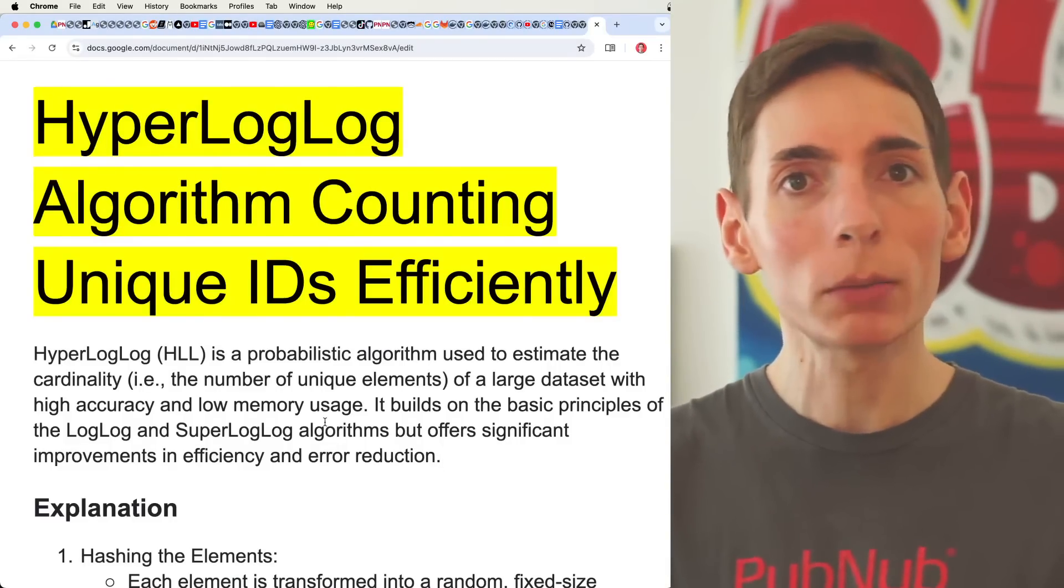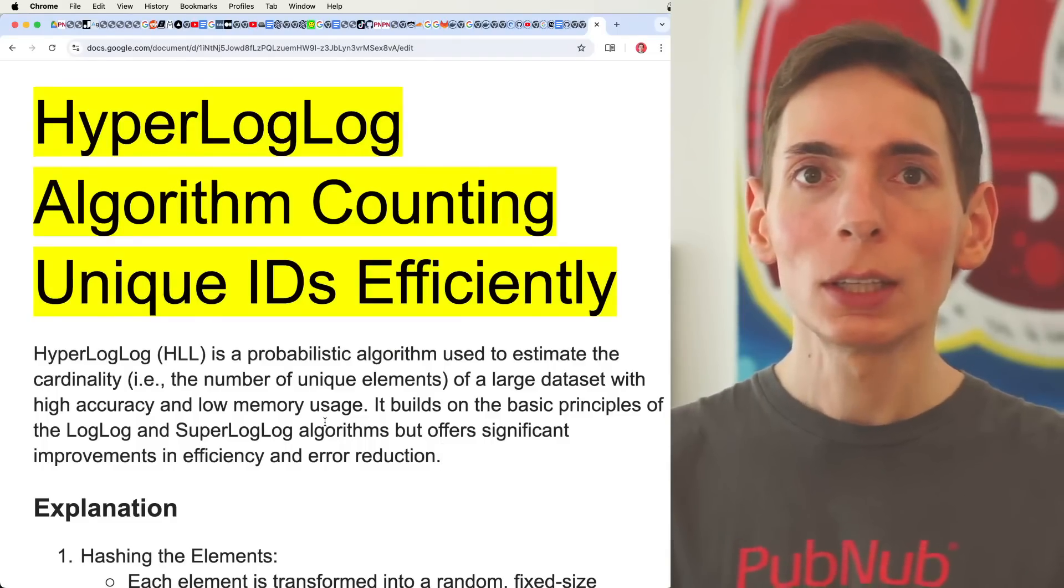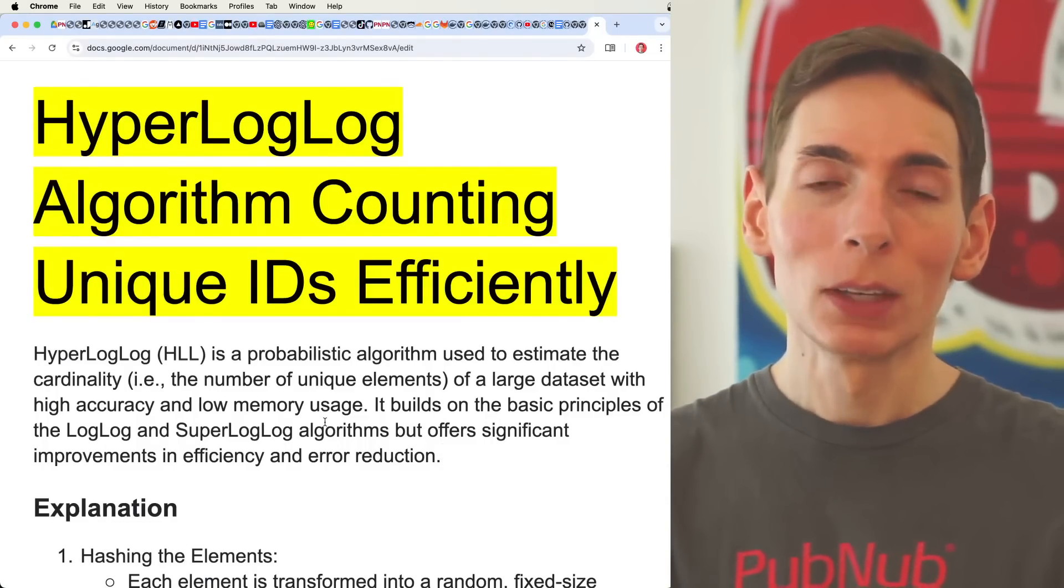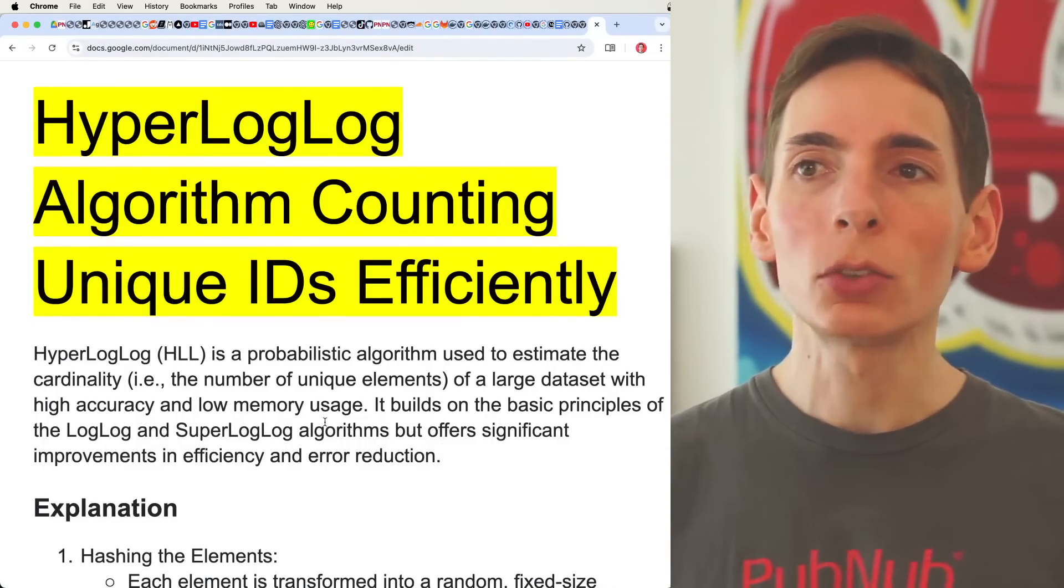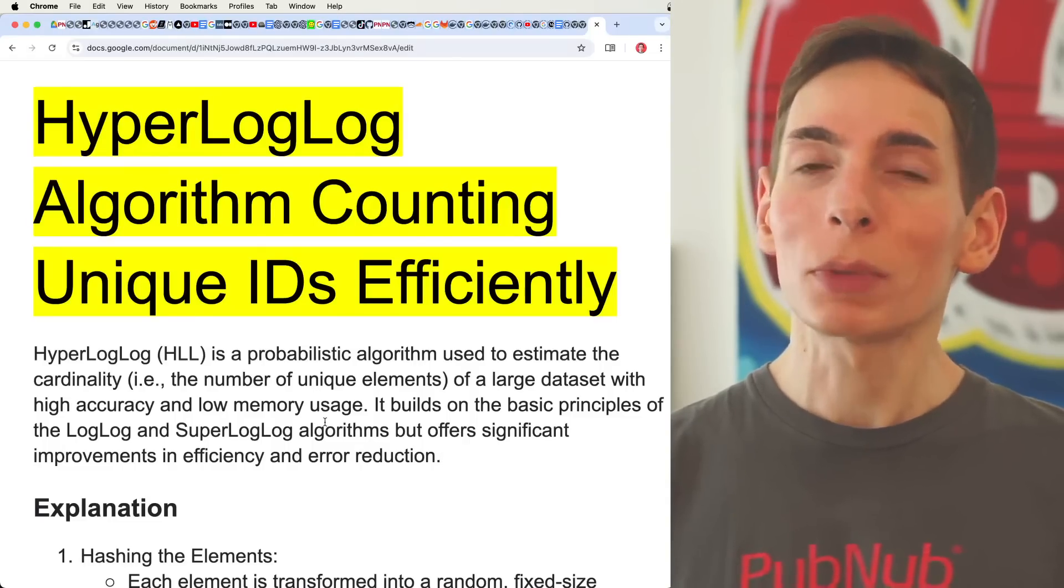In modern hardware, you have no problem counting and maintaining a list of a million or 10 million items in a simple HashMap. You can just maintain that list easily. Now, if you want to count unique numbers more efficiently, you will need something like HyperLogLog.